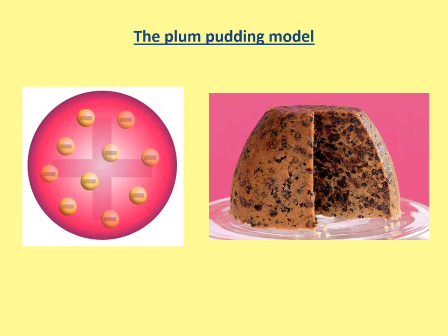It's called the plum pudding model because they thought it looked just like a plum pudding — similar to a Christmas pudding. There are two parts: it's got the cakey bit and the fruit dotted around inside. They thought the cakey bit was the positive charge, and the fruit dotted within it were the negative electrons. That's why it's called the plum pudding model — a famous model of what they thought this solid atom looks like. Then later on they did an experiment and realised it couldn't look like this.